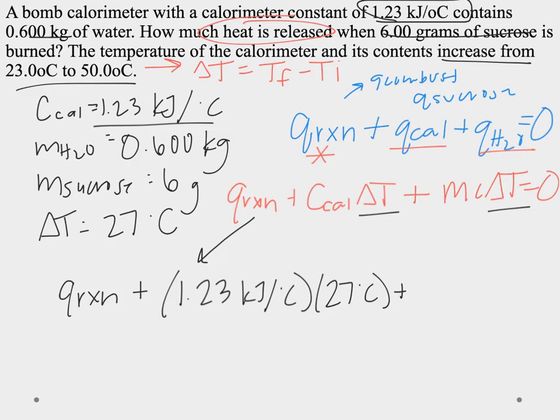Well, the specific heat of water is something that you need to know: 4.184 joules per gram degree Celsius. So, what's my mass unit in my specific heat? My mass unit in specific heat is grams.